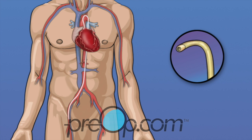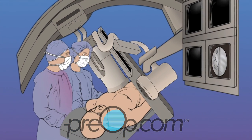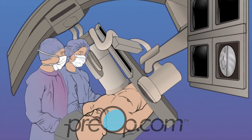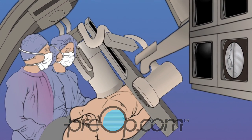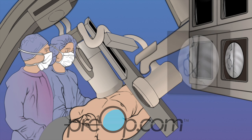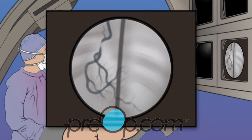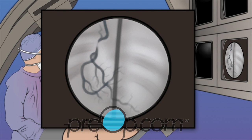Which artery is selected for the procedure depends on your personal situation and the experience and training of your cardiologist. A contrast dye that can be seen with an x-ray machine is given. X-ray pictures and video of the dye show the cardiologist how blood is moving through your heart.